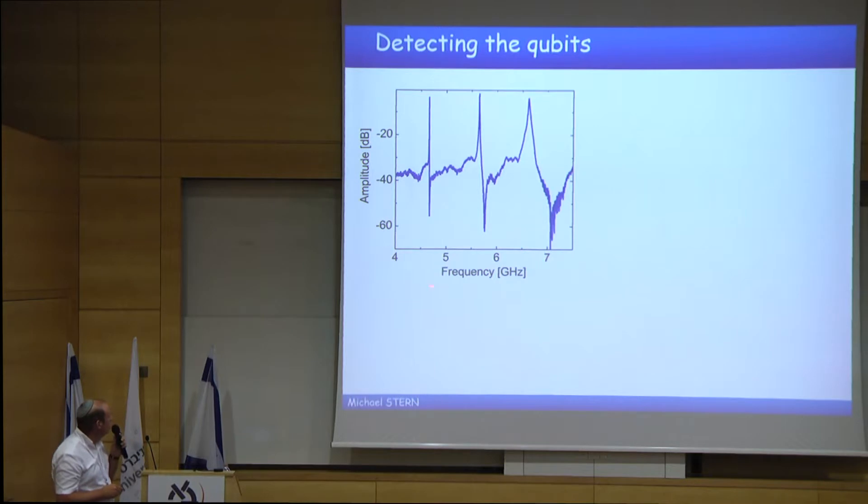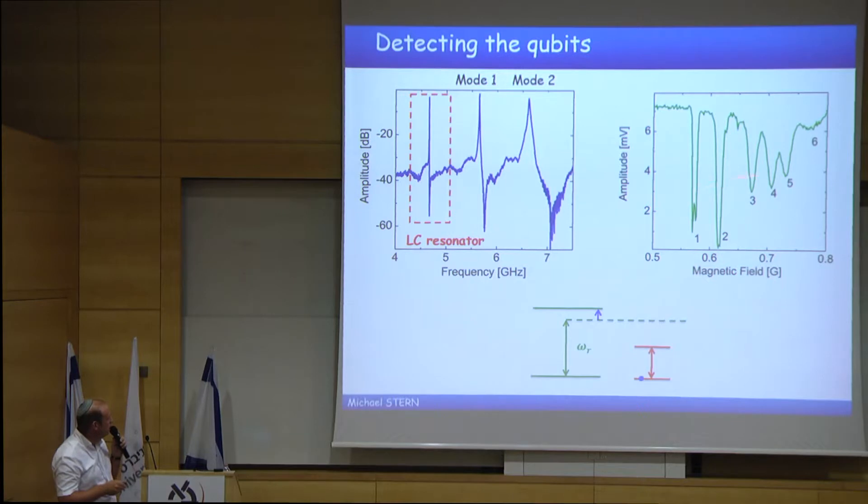The first thing we do, we look at the transmission of the cavity and we find indeed the first and second mode of the cavity, but also this mode, which corresponds to the LC resonator seen via the cavity. This is this mode that we will use in order to detect the qubit. When we have a qubit in the ground state and we have some coupling, we have a cavity pull or push, depending on whether it is above or below. And this is the way we can detect by sweeping the magnetic field and by keeping the probe frequency at the same value. And like that, we detect one, two, three, four, five, six flux qubits. They appear at different values of the magnetic field because they have different size, different area.